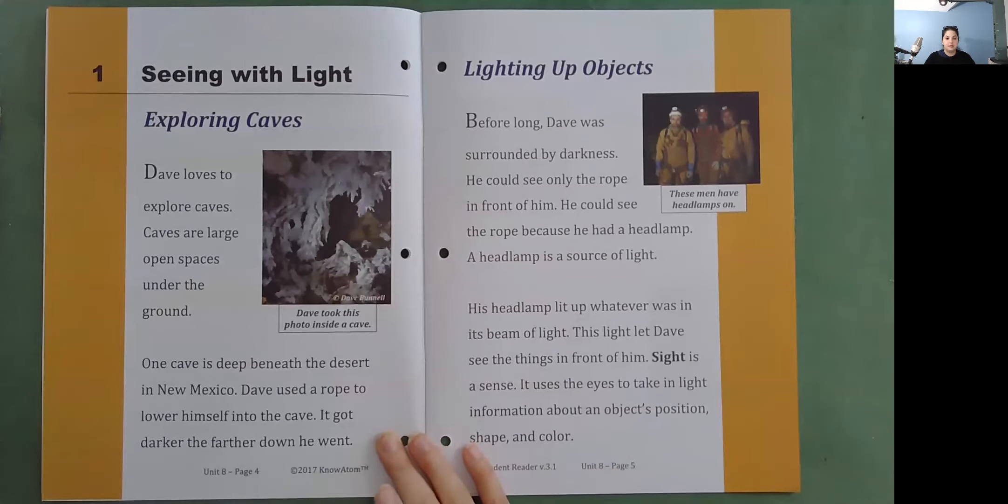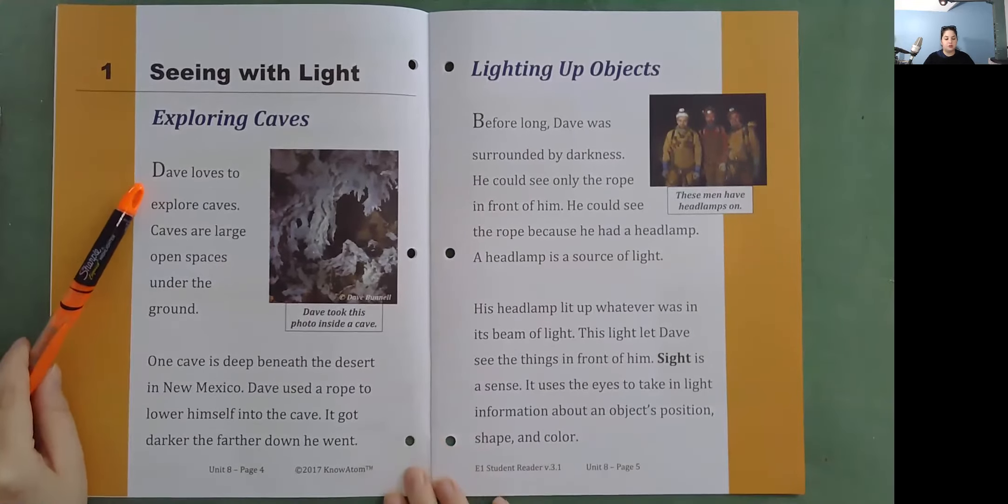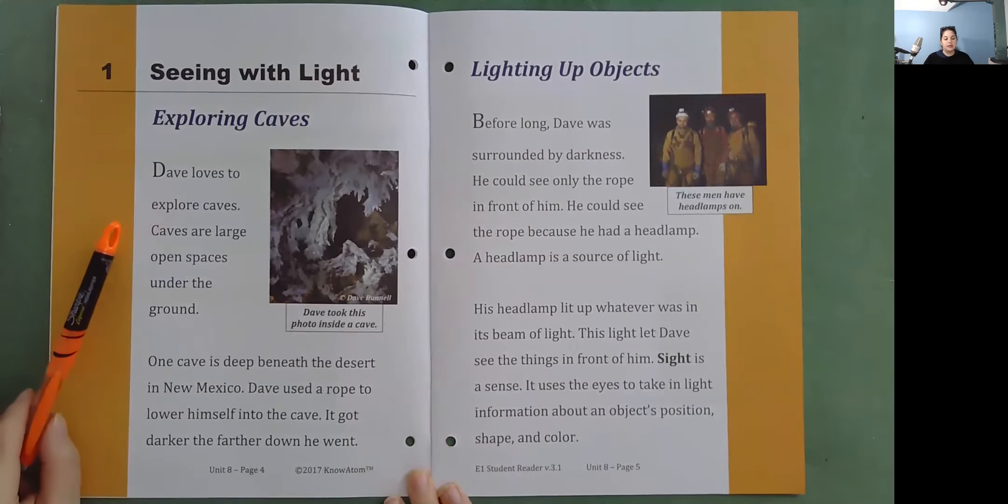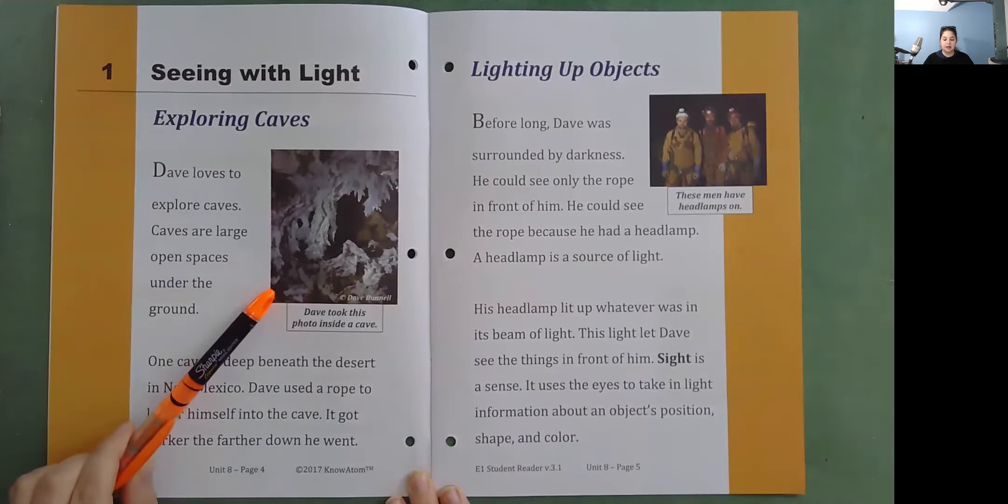Seeing with Light. Exploring Caves. Dave loves to explore caves. Caves are large open spaces under the ground. One cave is deep beneath the desert in New Mexico. Dave used a rope to lower himself into the cave. It got darker the farther down he went. Dave took this photo inside a cave.